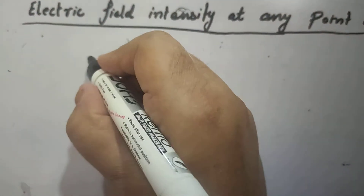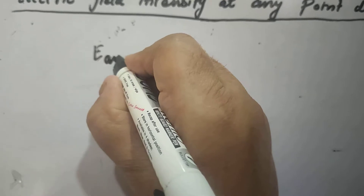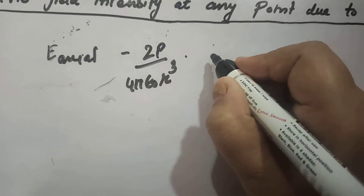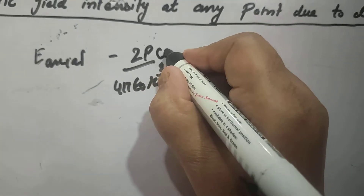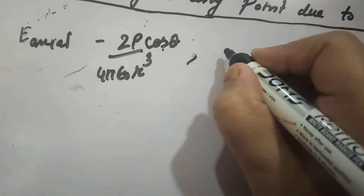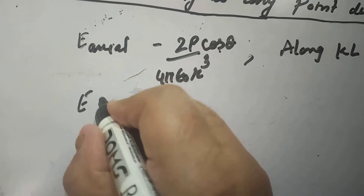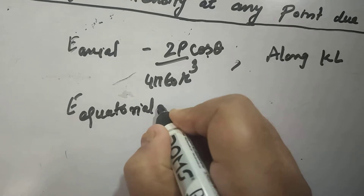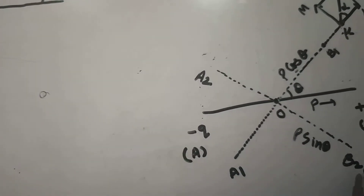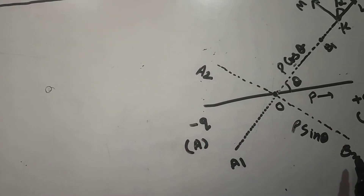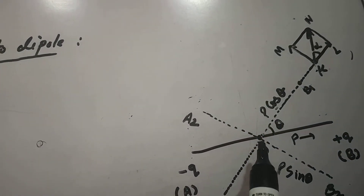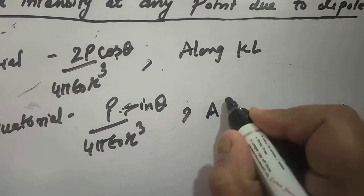We know that at the axial line, E axial equals 2P upon 4 pi epsilon naught r cube. Here P is replaced by P cos theta along the axial line, and the direction is along KL. Similarly, E equatorial equals P upon 4 pi epsilon naught r cube. Here P is replaced by P sin theta along the equatorial line, and this is along MK because it is opposite to the dipole direction.